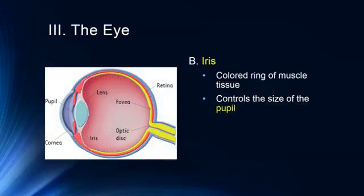The iris is the colored ring that determines eye color. It's actually a ring of muscle tissue, and its function is to control the size of the pupil — expanding and contracting to let more or less light into the rest of the eye.